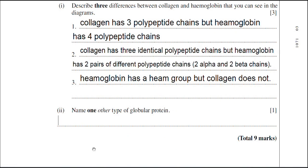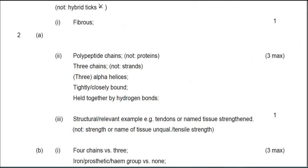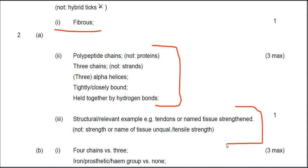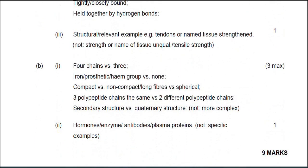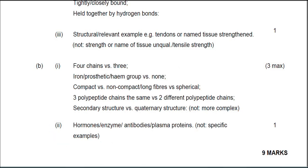Name one other example of a globular protein. There are many different types of globular proteins — hormones would be an example, enzymes, and even antibodies could be classed as globular proteins. My answer is: enzymes. Let's have a quick look at the marking scheme. Part A1: fibrous. There are the features of the collagen molecule, the functions of the collagen molecule, the differences between haemoglobin and collagen, and lastly some examples of other globular proteins.